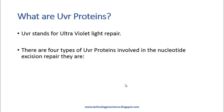Let's look at the overall process in more detail and what UVR proteins are. UVR stands for ultraviolet light repair. There are four different types of UVR proteins involved in nucleotide excision repair in bacteria. Nucleotide excision repair differs from base excision repair in that base excision repair removes only one nucleotide — a single base — by glycosylase.